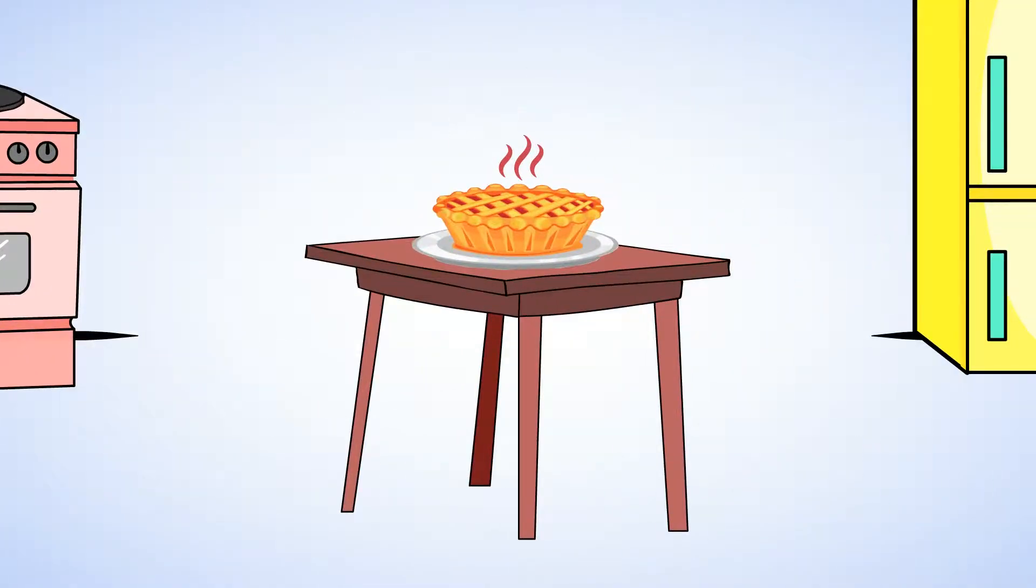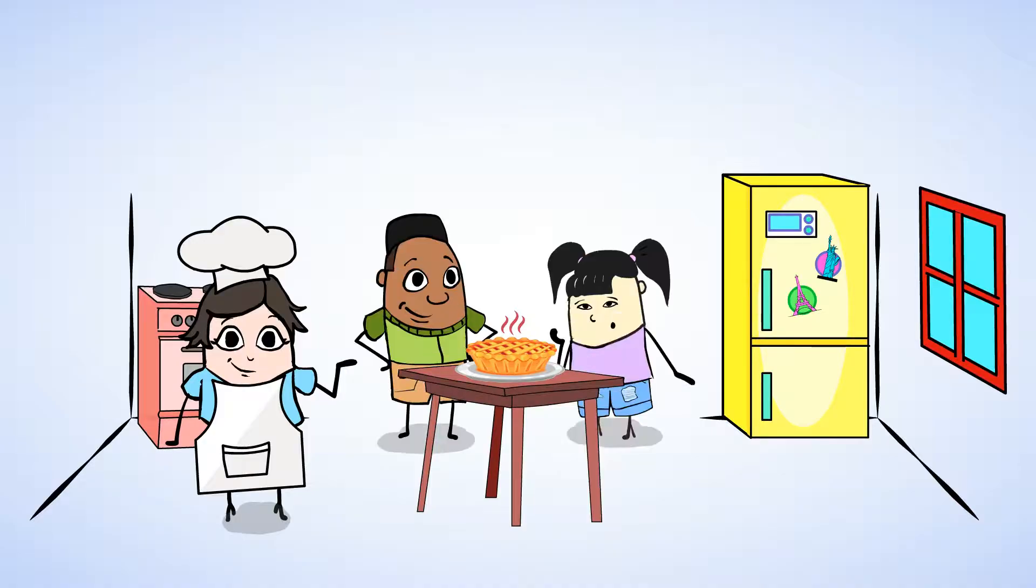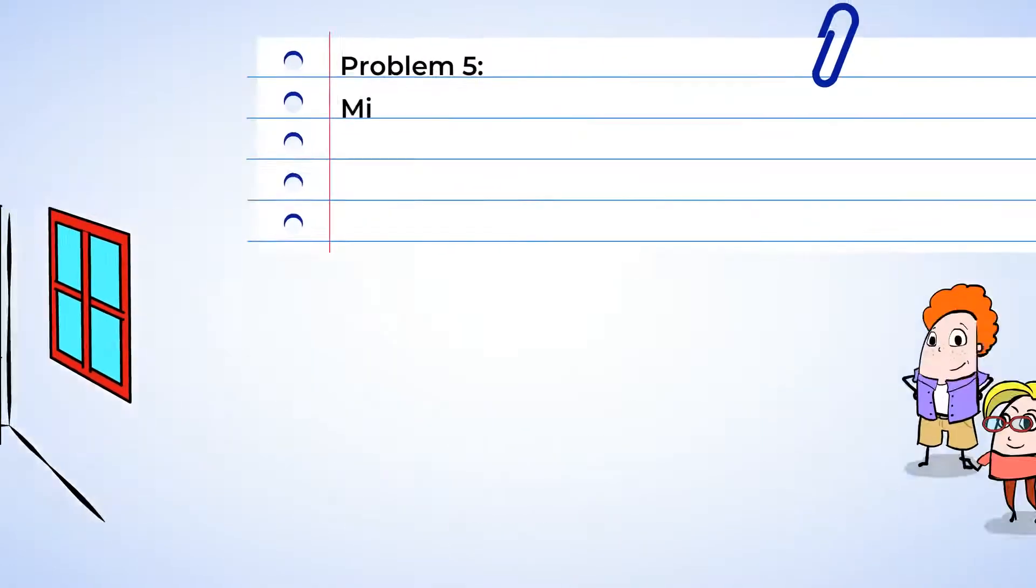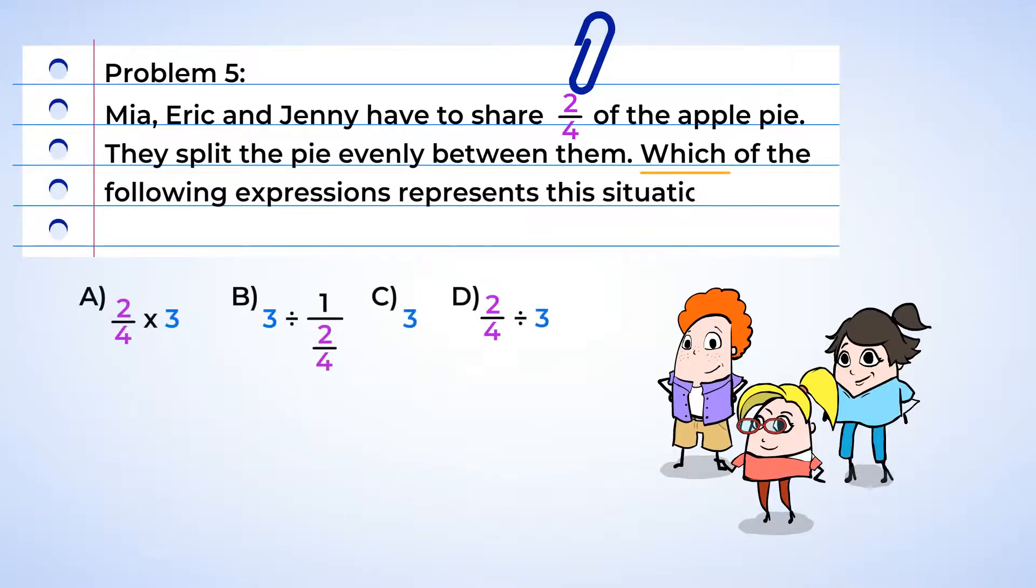Mmm, what's that smell? Oh, yes! Mia made an apple pie to share with her friends for all the good work they did today. But all that writing made Will and Sue really pretty hungry, and so they already ate some of the pie, leaving two-fourths to their other friends. Mia, Eric, and Jenny have to share two-fourths of the apple pie.